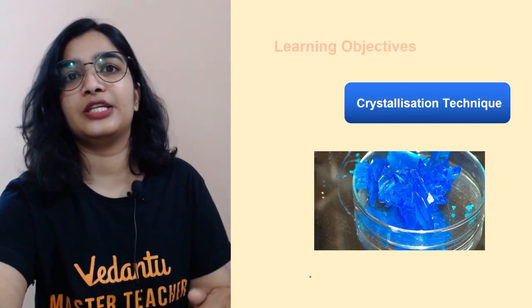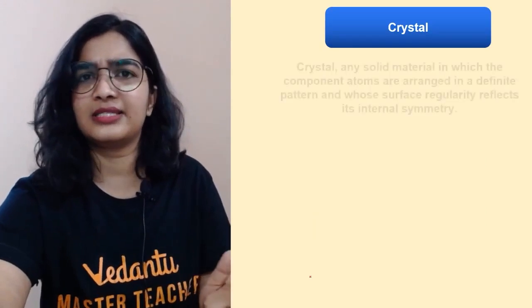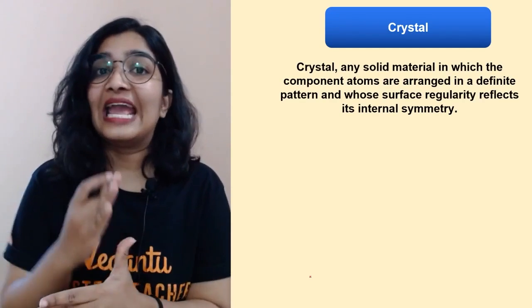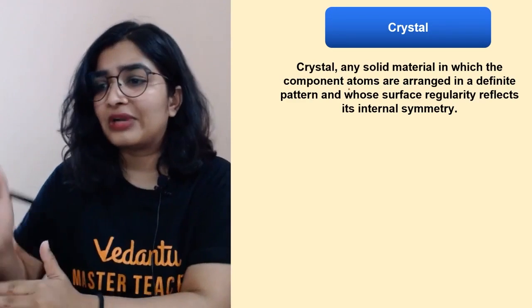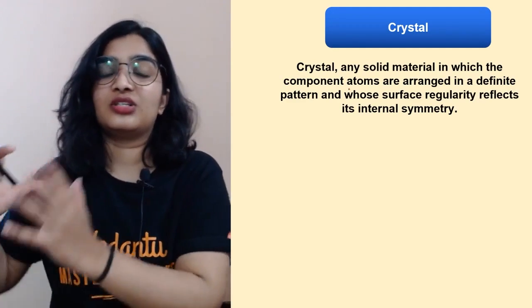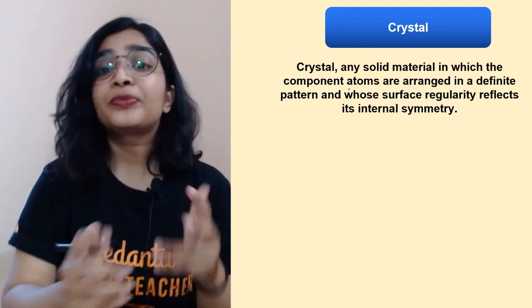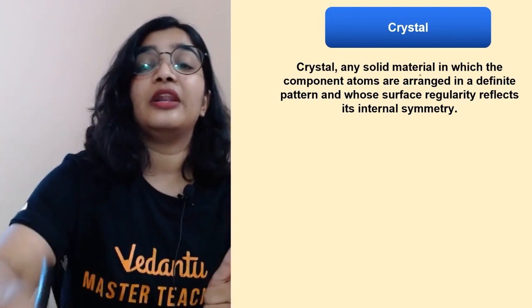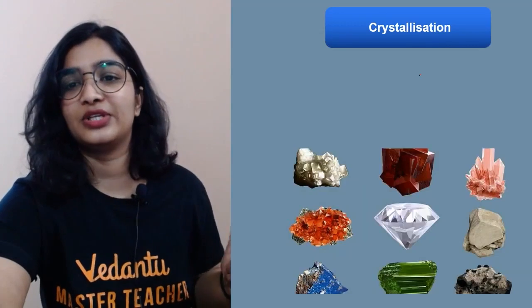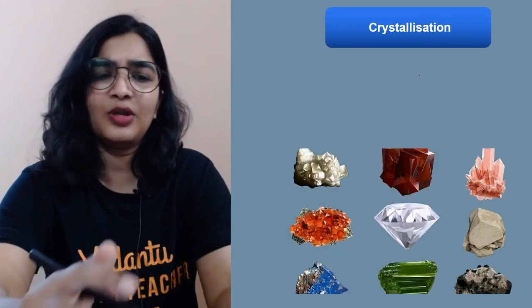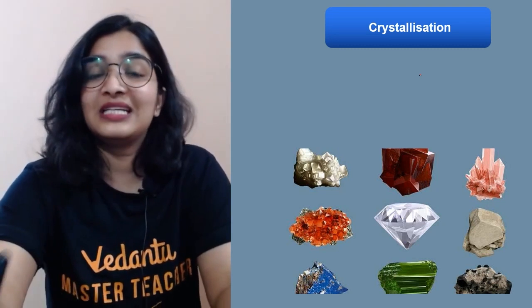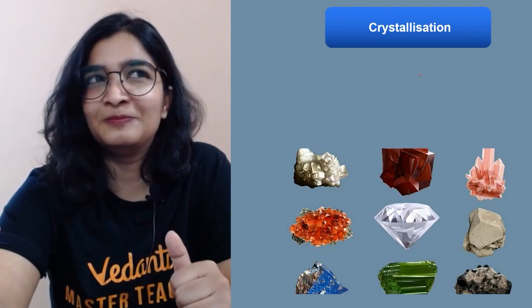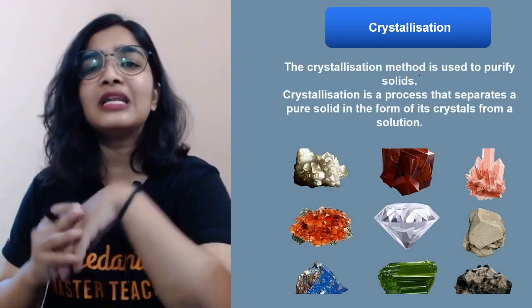Today we're talking about crystallization technique. Can you define crystal? A crystal is any solid material in which the component atoms are arranged in a finite pattern — a very well-arranged crystalline structure whose surface regularity reflects its internal symmetry. Here are a few crystals. Imagine forming crystals at home — more interesting, right?